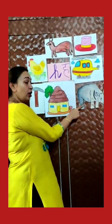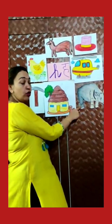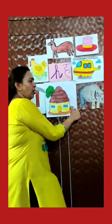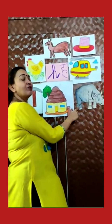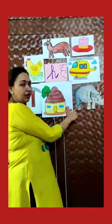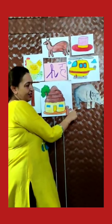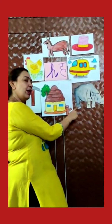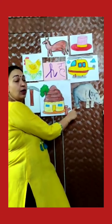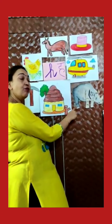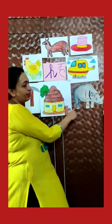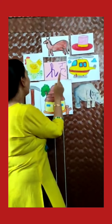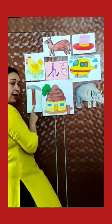H for hippo. Hippo is a very big animal, but it is a wild animal. Hippo likes to live in water. H for hippo is a wild animal.